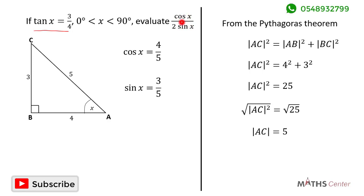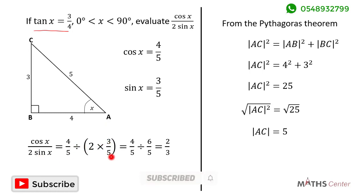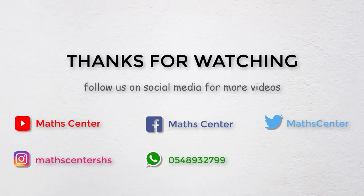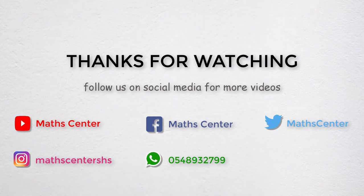We can now find cos x divided by 2 times sin x. Substituting, we get 4/5 divided by 2 times 3/5, which gives us 4/5 divided by 6/5, and this simplifies to 2 divided by 3. So cos x divided by 2 sin x equals 2 divided by 3.